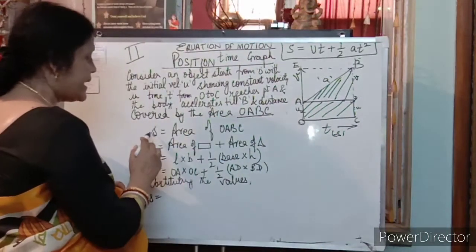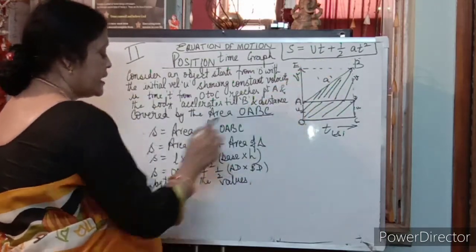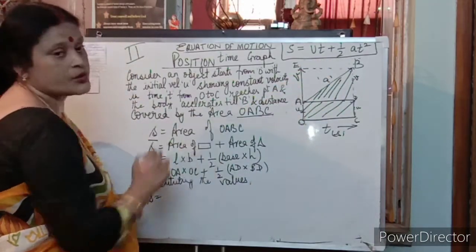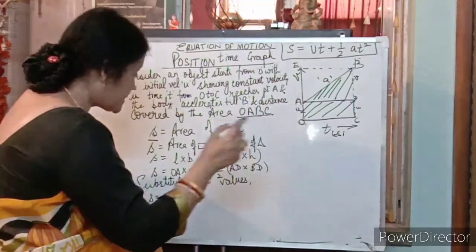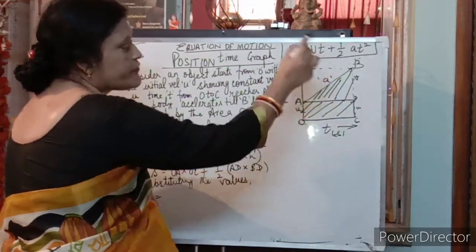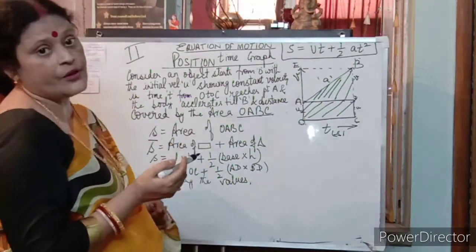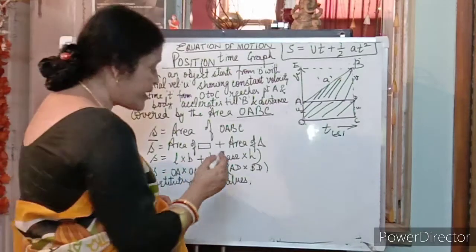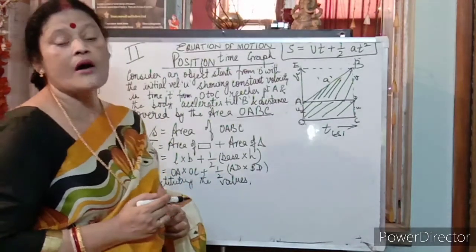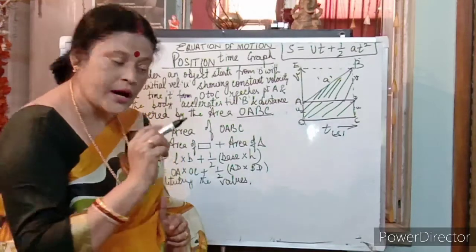Now, S is equal to area of O, A, B, C. Distance jo cover kara that is O, A, B, C. Which is equal to area of rectangle and area of triangle. Area of rectangle we know that length into breadth and triangle ka area we know that half base into height.